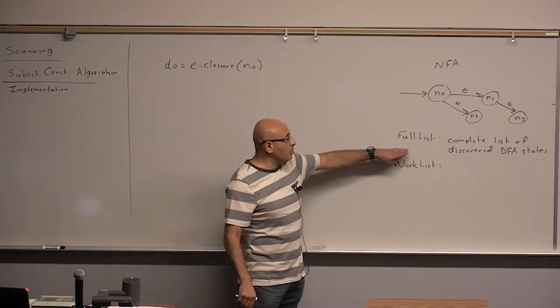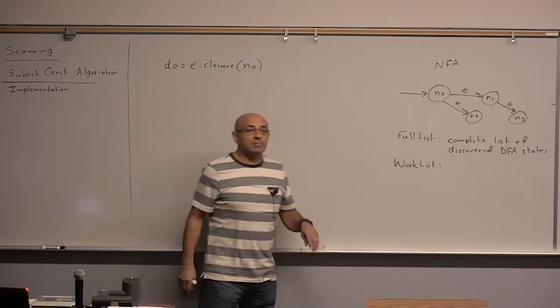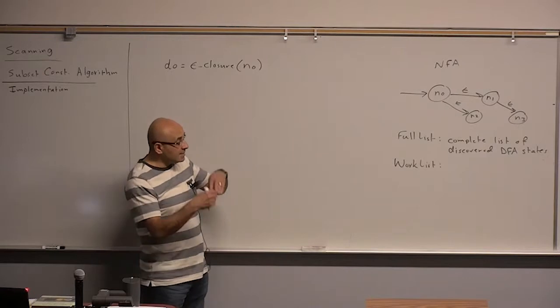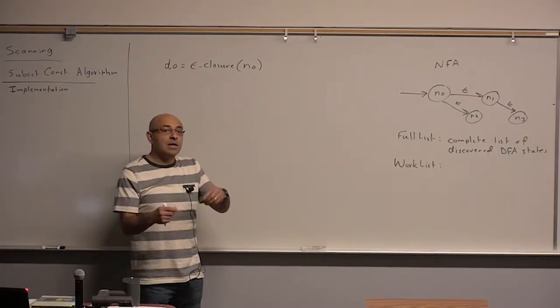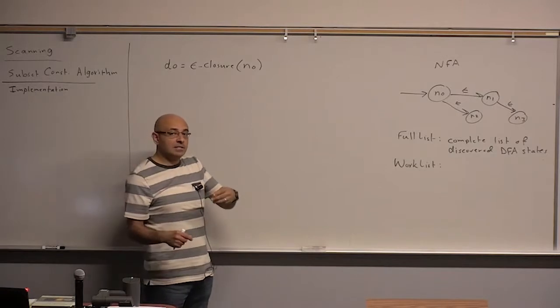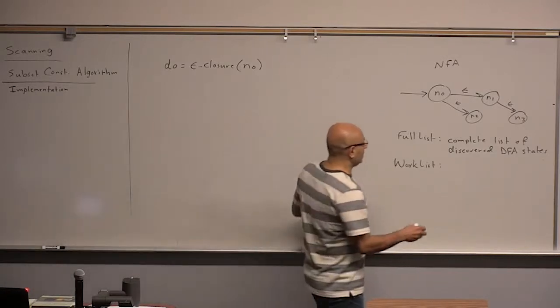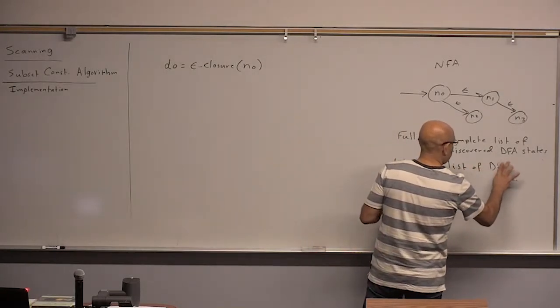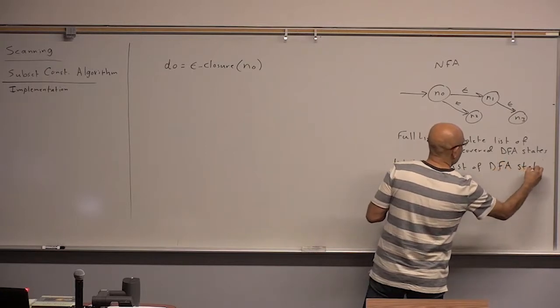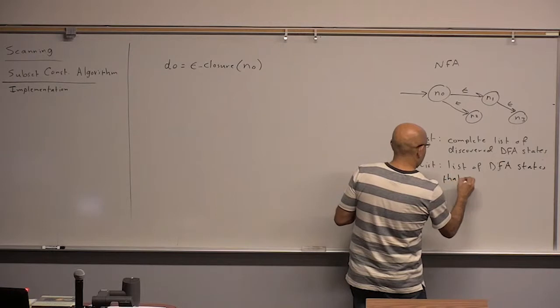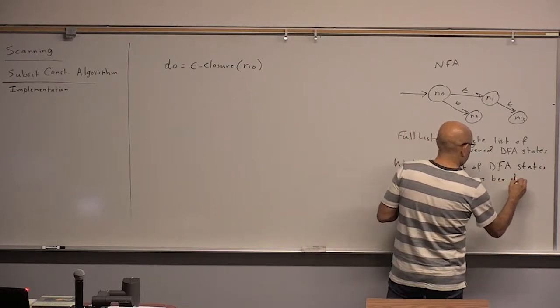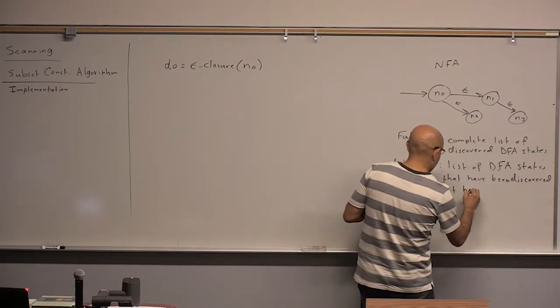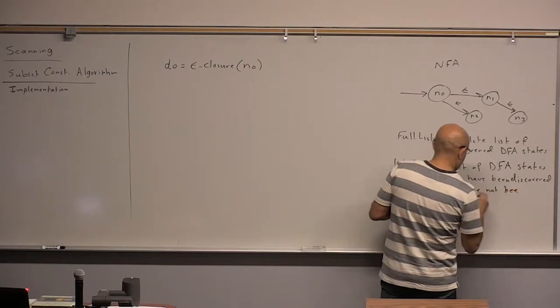It needs a spot to accumulate states on the list before it adds it to the full list or checks it against the full list. Okay. So we have the full list in which we accumulate all the states, but at any given point in time, we will have some lists that have been discovered but have not been examined yet, have not been processed. In other words, we haven't looked at their transitions, the transitions out of these states.